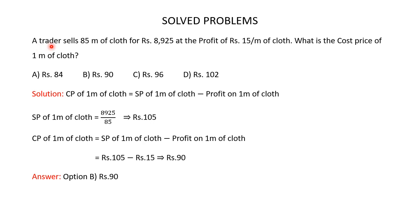A trader sells 85 meters of cloth for Rs 8,925 at a profit of Rs 15 per meter of cloth. You are given 4 options and you have to find the cost price of 1 meter of cloth. The cost price of 1 meter equals the selling price of 1 meter minus the profit on 1 meter. The profit on 1 meter is Rs 15, so we need to find the selling price per meter first.